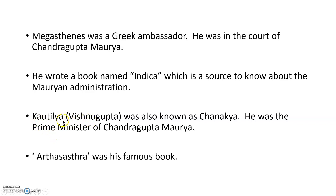Kautilya, also known as Vishnugupta and Chanakya, was the prime minister of Chandragupta Maurya. With his help, Chandragupta dethroned Mahapadmananda of the Nanda Dynasty and established the Mauryan Empire. Kautilya's famous book, the Arthashastra, contains detailed information on how kings should conduct their administration.